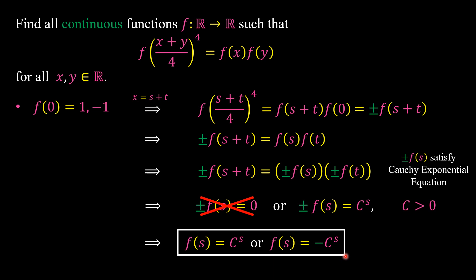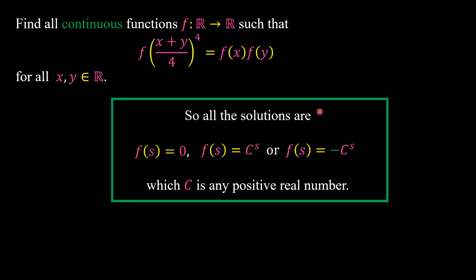It is very easy to check that for any positive real number c, these two solutions satisfy the functional equation. Together with the first case, all solutions of the problem are: f(x) = 0, f(x) = c^x, or f(x) = −c^x, where c is any positive real number. And we are done.